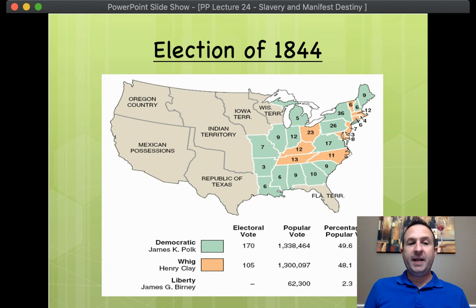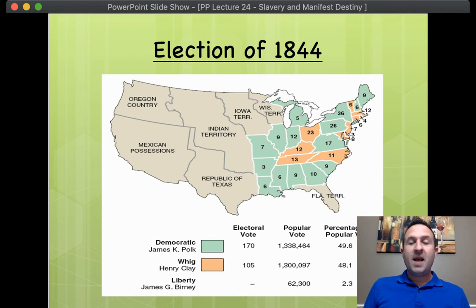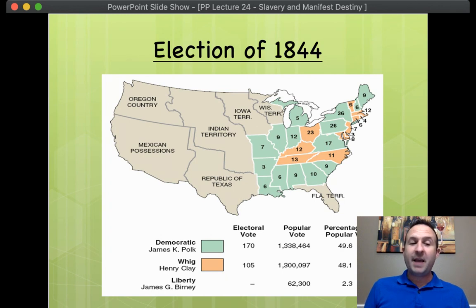Now, unlike a treaty, which needs a two-thirds majority in the Senate — which Tyler did not have, as he's very unpopular — a joint resolution only needed simple majority support. And because Texas was an issue that people rallied around, Texas was able to join the Union in 1844.